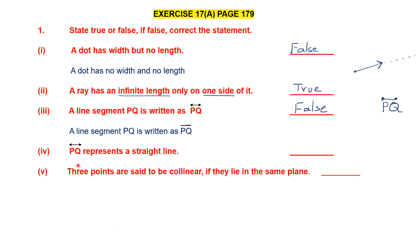Next one. PQ with arrowheads on both ends represents a straight line. This statement is true, because a straight line is the one that goes on on both sides indefinitely.